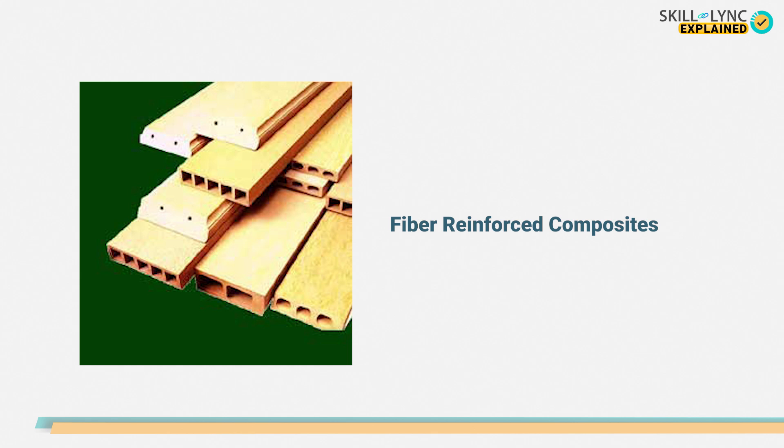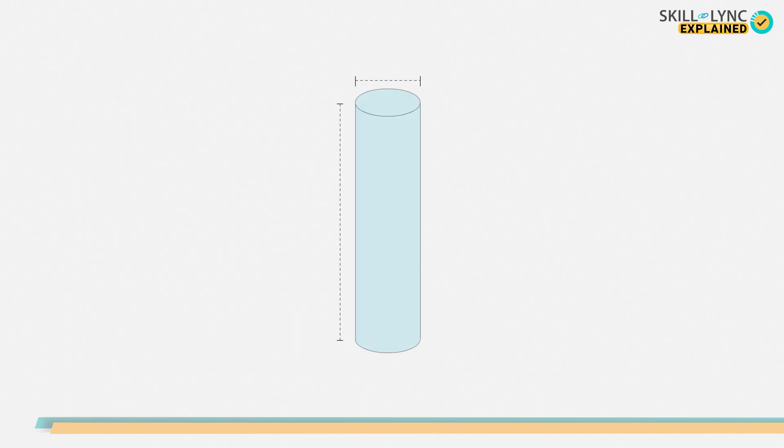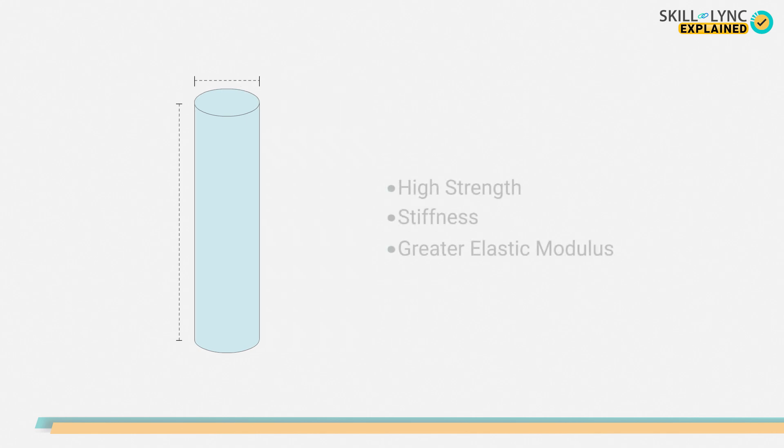The next type of composites is the fiber reinforced composites. Fibers are characterized by their length to diameter ratio. They possess high strength and stiffness, and the elastic modulus of fibers will also be greater than that of the matrix.